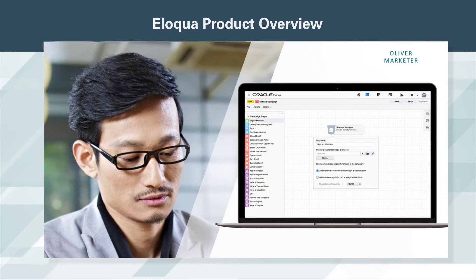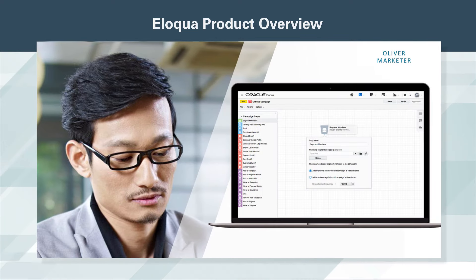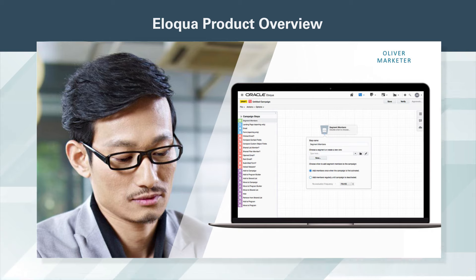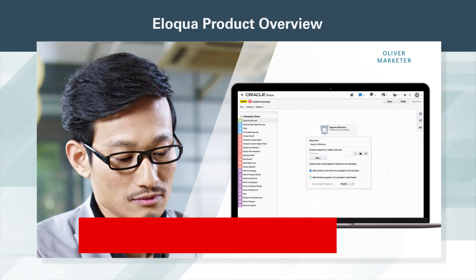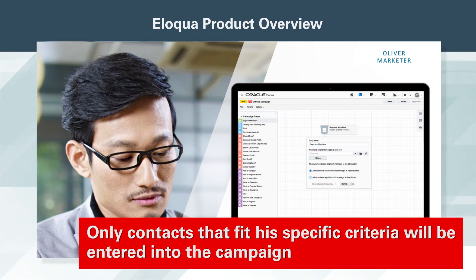Then, by using either a new or existing filter, Oliver is able to set the segmentation criteria that will be used to feed contacts into his campaign. Only contacts that fit his specific criteria will be entered into the campaign.